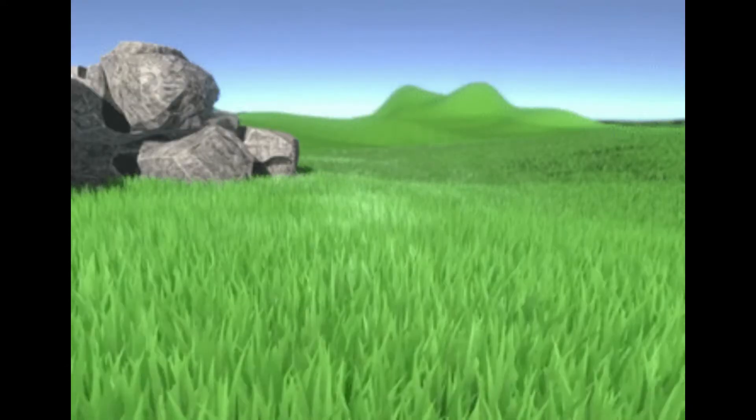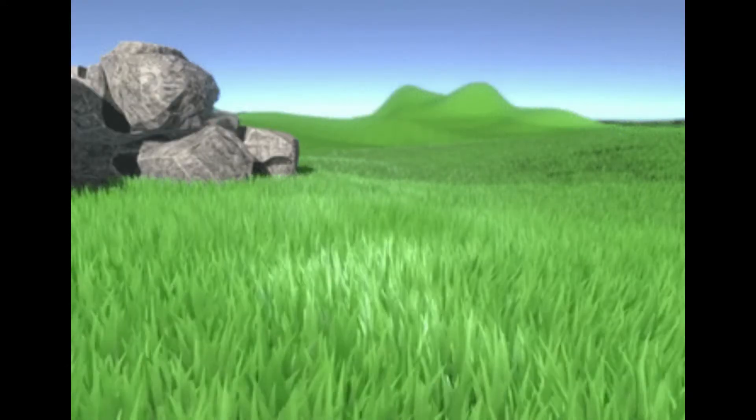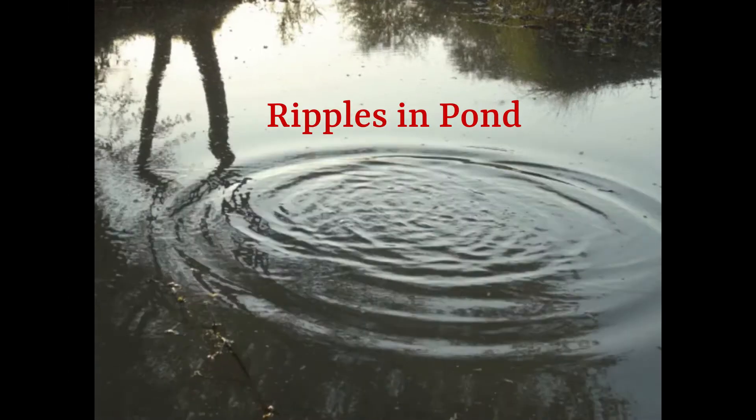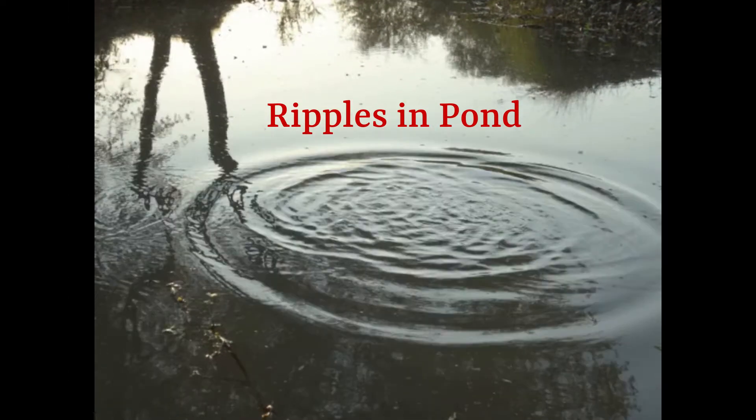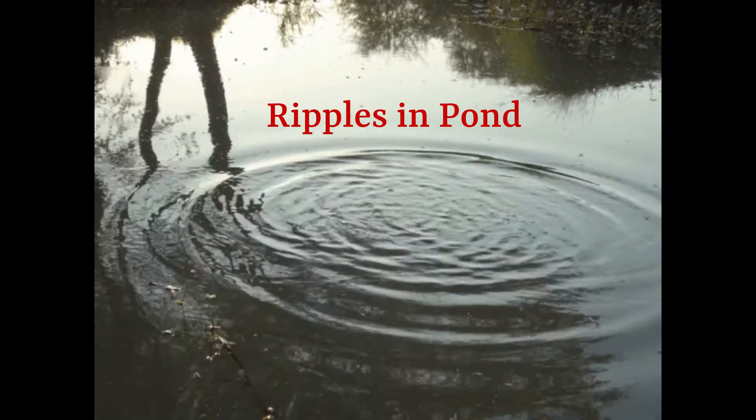Similarly, crops and trees also wave in the wind as they repeat their motion. You must have dropped a stone in the pond and noticed ripples traveling outwards. If we represent it graphically, it will look something like this.